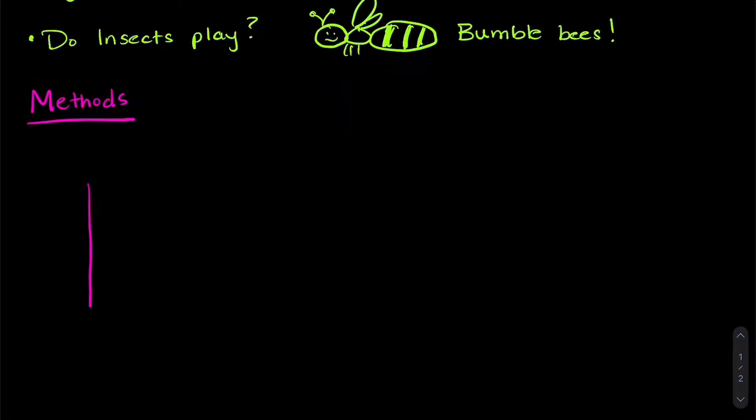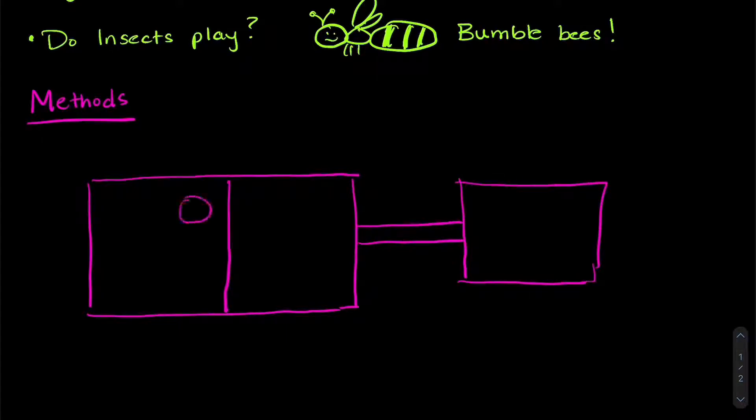The researchers designed an experiment where they could observe bee behavior. I'm just going to draw their apparatus here, and I'll explain it in a second. Over here on the right hand side is the nest box, where they nested.